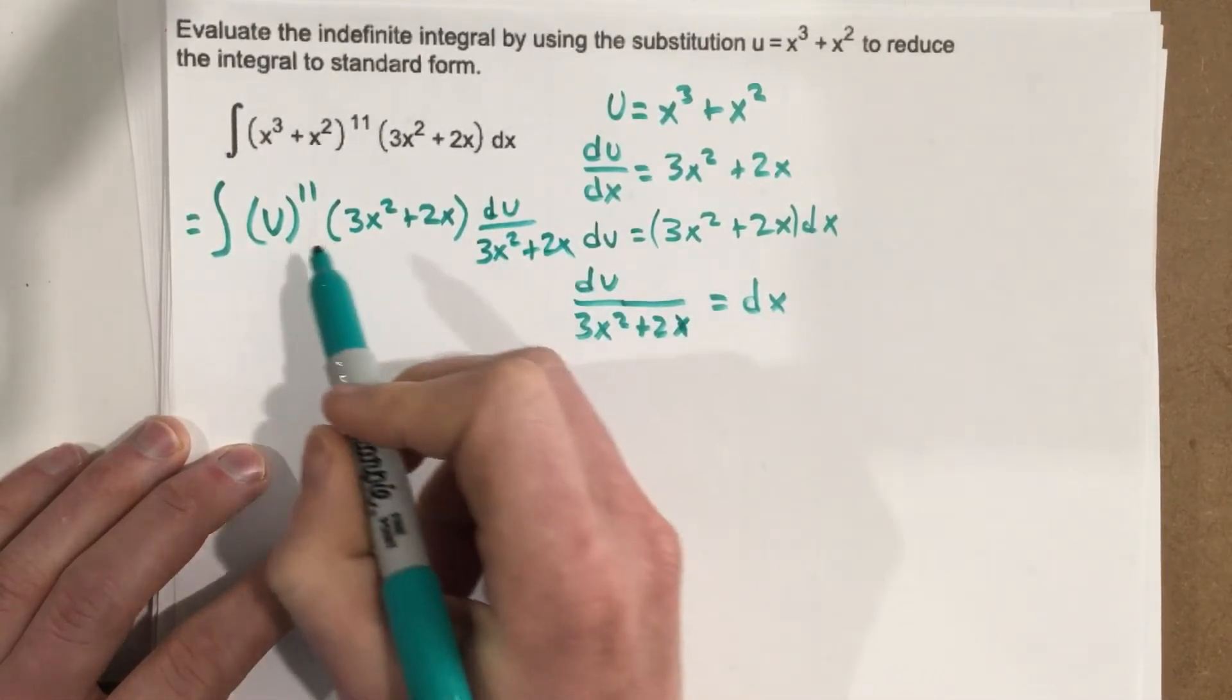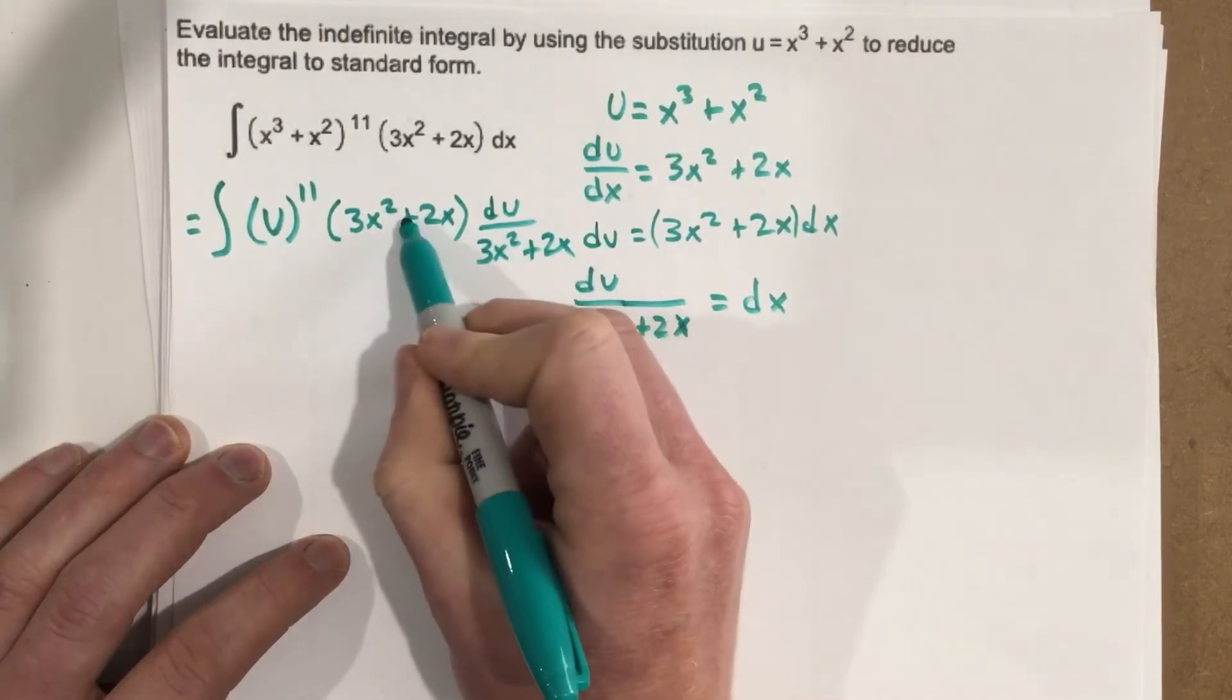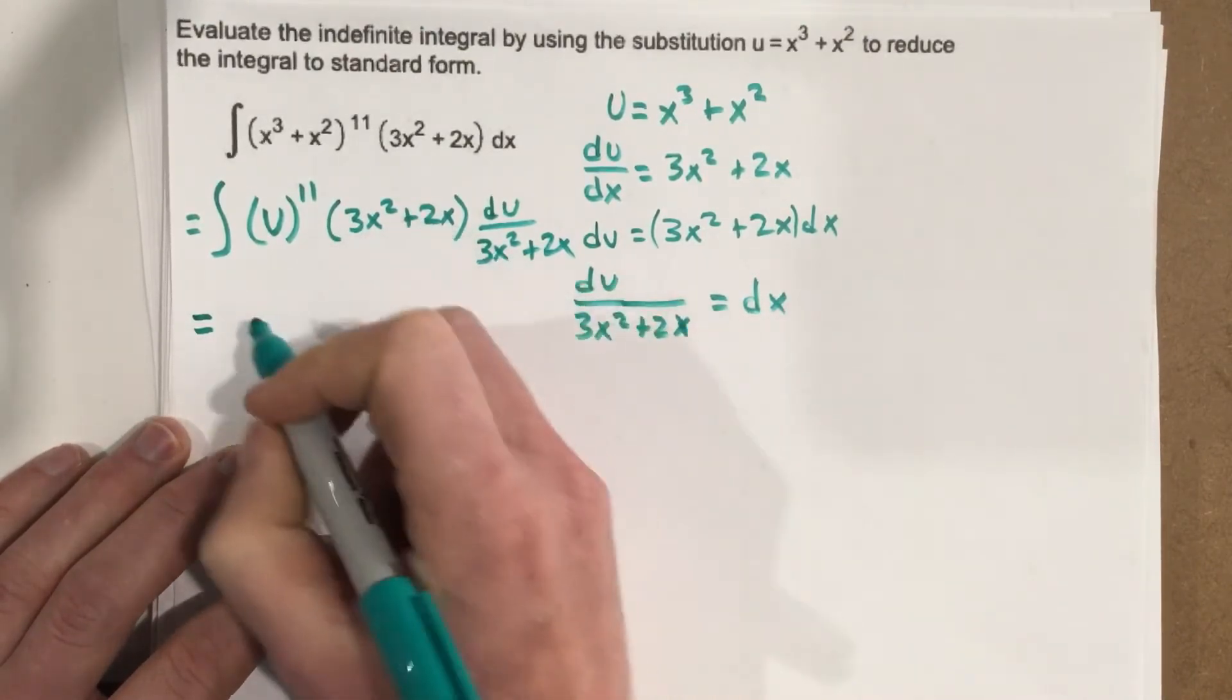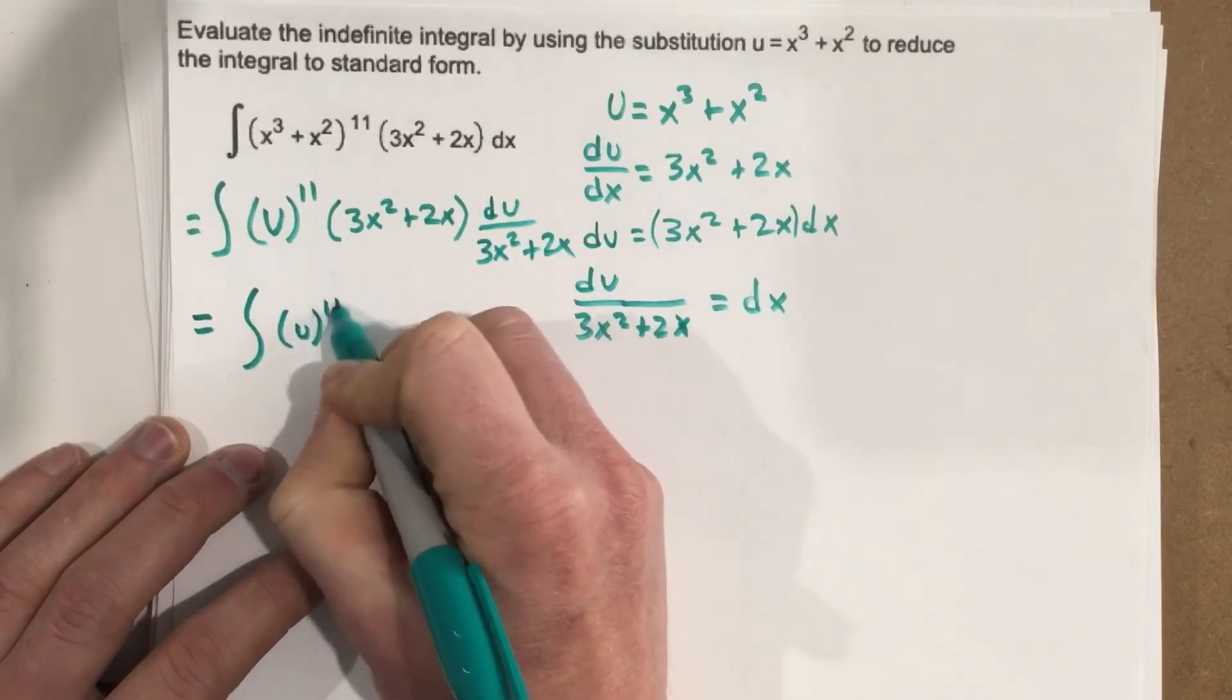Now, you can see this was over 1. So this is in the denominator. That's in the numerator. They cancel each other. So when they cancel each other, all we're left with is integral u to the 11th du.